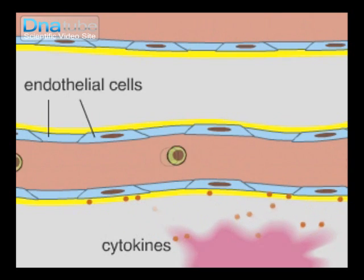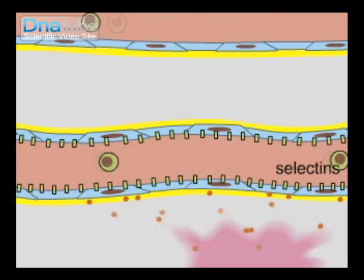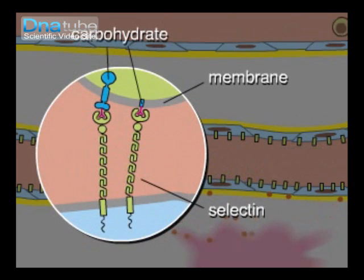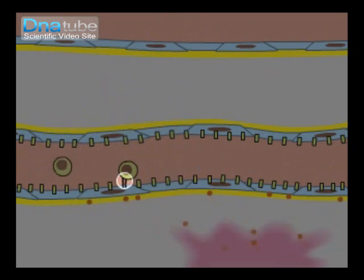The endothelial cells then express surface proteins called selectins. Selectins bind to carbohydrates displayed on the membrane of the leukocytes, causing them to stick to the walls of the blood vessels.